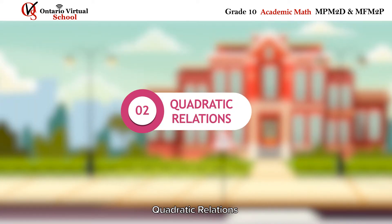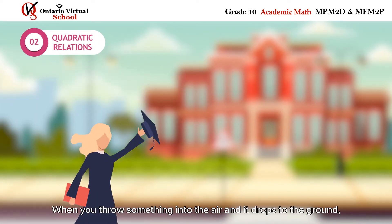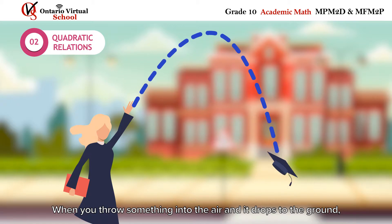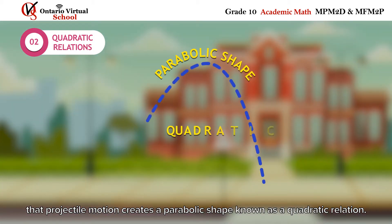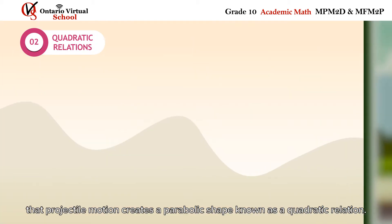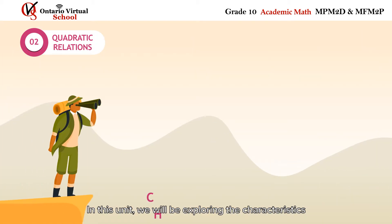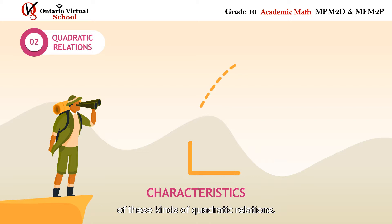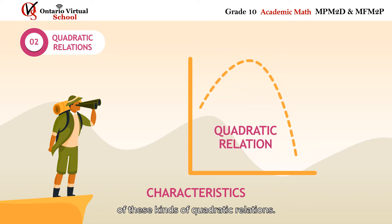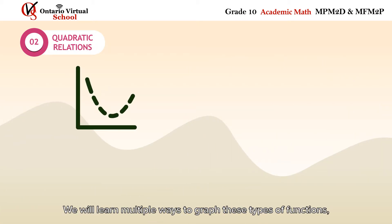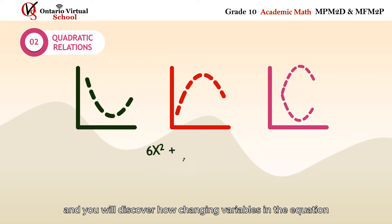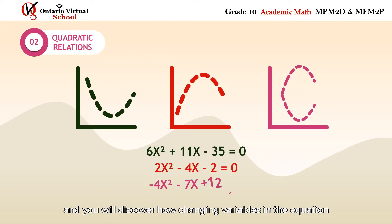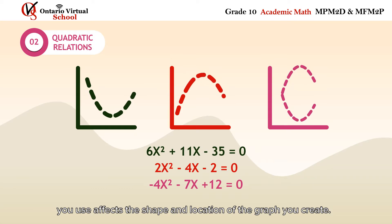Quadratic Relations: When you throw something into the air and it drops to the ground, that projectile motion creates a parabolic shape known as a quadratic relation. In this unit, we will be exploring the characteristics of these kinds of quadratic relations. We will learn multiple ways to graph these types of functions, and you will discover how changing variables in the equation affects the shape and location of the graph you create.